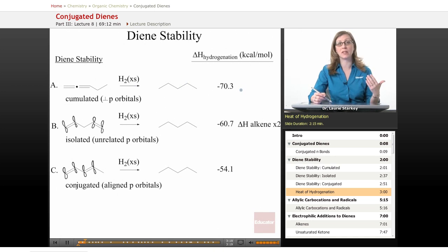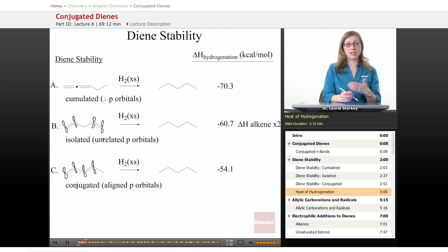Let's take a look at the isolated pi bonds initially. The energy released there is -60.7 kcal/mol. That's essentially the heat of hydrogenation for an alkene times two. Because these double bonds are separate from each other and have no interaction, you simply get twice as much energy out as if you had just one pi bond.